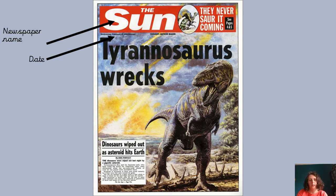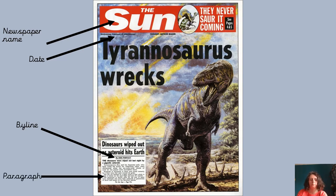Here we have something called a byline. A byline is basically the author — there'll be lots of people who work on a newspaper, and often it will tell you who wrote each piece of news, who wrote each story. Where it says 'by' and their name, that is called a byline. It's just like an author of a book. The next feature is a paragraph. A paragraph is a group of sentences in a big chunk.